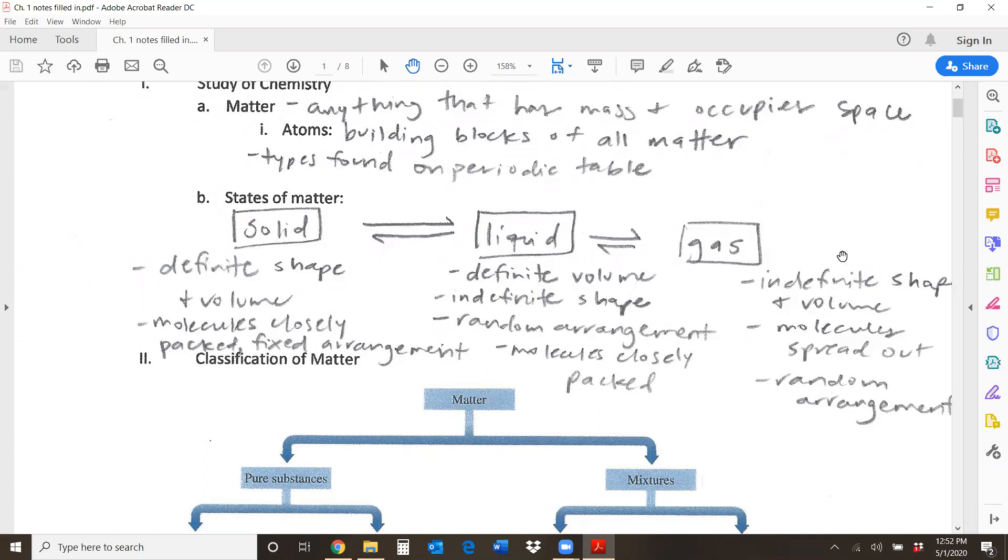Gases, however, they have an indefinite shape and volume, meaning their shape and volume can both be changed very easily. And gases will just adapt to the space that you give them. So whatever container you put a gas in, its molecules will spread out as much as possible and take up that entire space. So molecules are spread out. There's a random arrangement there.